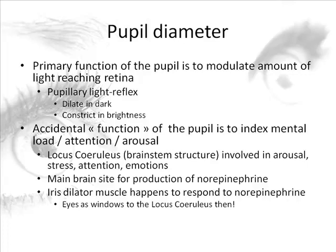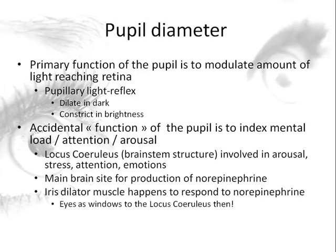Pupil diameter — the primary function of the pupil, which is the opening in the middle of the eye, is to modulate how much light reaches the retina. The iris dilates in darkened conditions and constricts in bright conditions. But the pupil also indexes mental load, attention, and arousal. If people get excited or very busy with a task, the pupil increases in diameter. So the eyes are less the windows to the soul and more like windows into the brainstem.